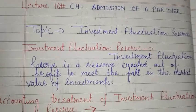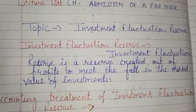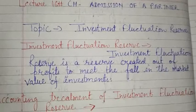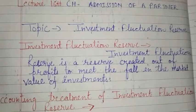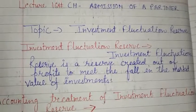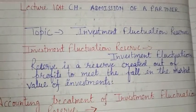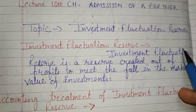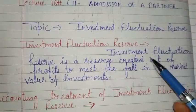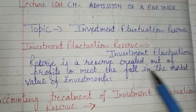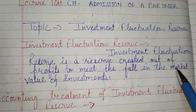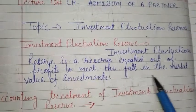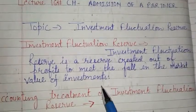Good morning class. Today I will start a new topic from your chapter 'Admission of a Partner' - the topic is Investment Fluctuation Reserve. Investment Fluctuation Reserve is a reserve created out of profits to meet the fall in the market value of investments.